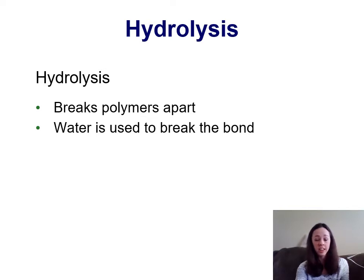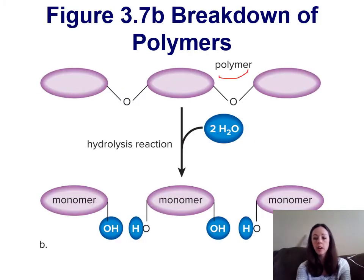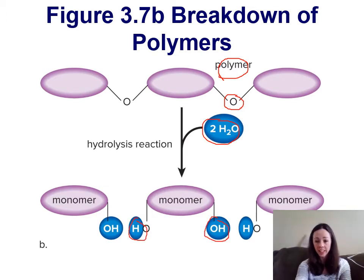Hydrolysis is just like it sounds — you use water (the Latin root word for water) to lyse or break apart the polymer, so we end up with our monomers. During the hydrolysis reaction, water molecules are used to break the bonds in between the monomers. The hydrogen and hydroxide ions are split apart and added to each side of our monomer, so the monomers can no longer bind together and are left as independent molecules.